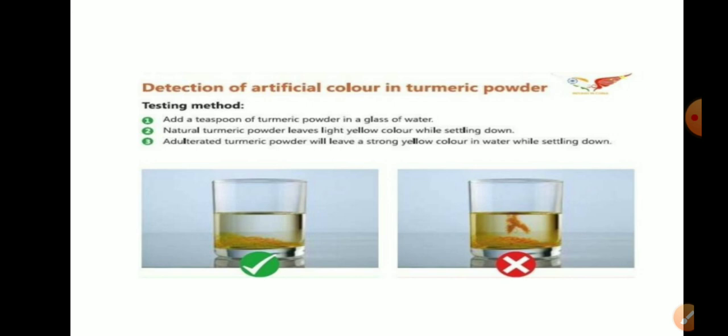Add a teaspoon of turmeric powder in a glass of water. Natural turmeric powder leaves a light yellow color while settling down. Adulterated turmeric powder will produce a strong yellow color in the water. With pure turmeric, the particles settle to the bottom.